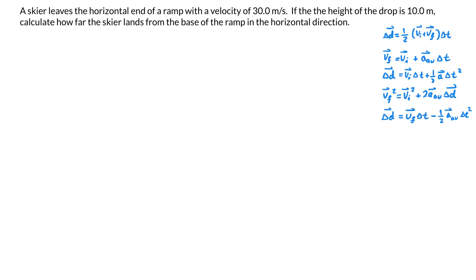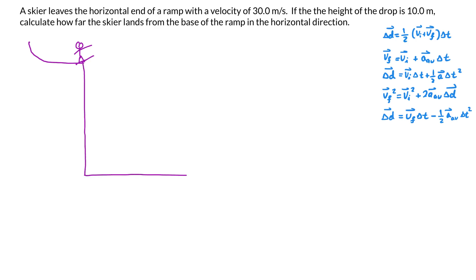The first step in solving these types of questions that I recommend is to draw a system diagram, so let's do that first. In this case we get a ramp that comes down and then we get a horizontal section as it says in the question. We basically have a skier jumping from this, dropping down, and eventually landing somewhere, so I'm going to draw the skier's final position right here.